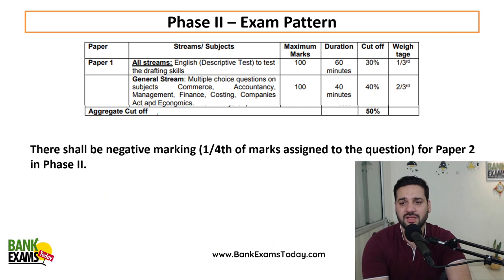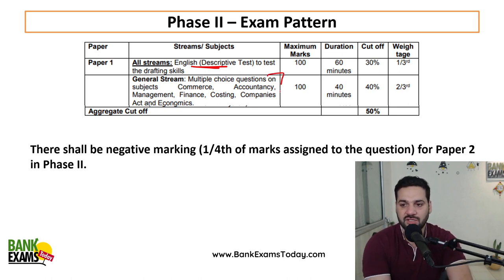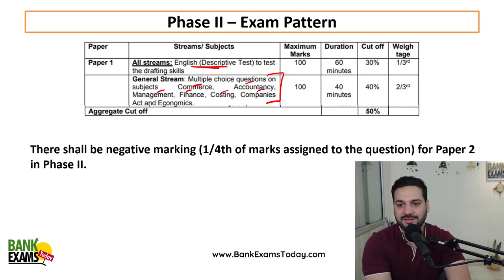In Phase 2 there is an additional subject of descriptive paper, but quant, reasoning and English is not there, general awareness is not there. So this professional knowledge section — the syllabus for these papers is the same. Again, there is commerce, accounting, management, finance, costing, companies act and economics.